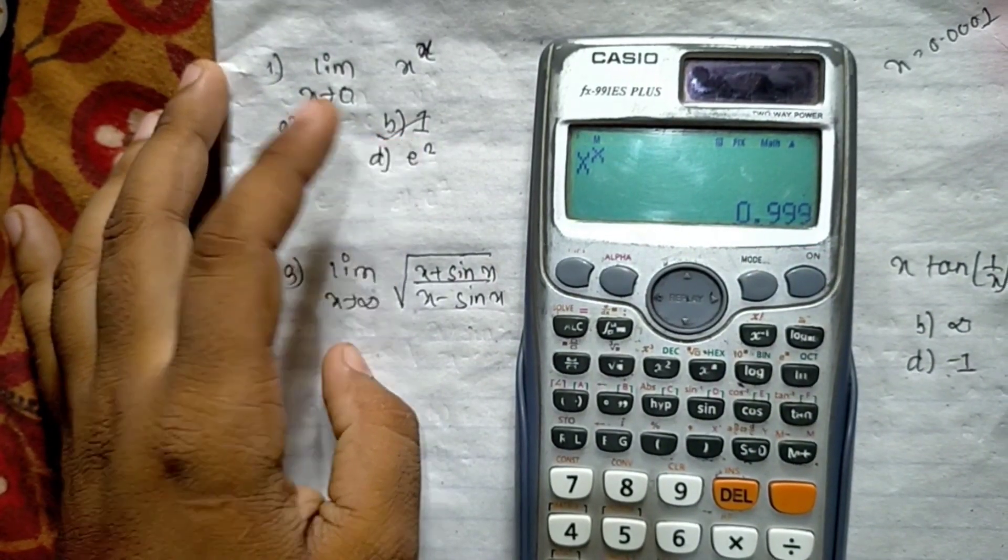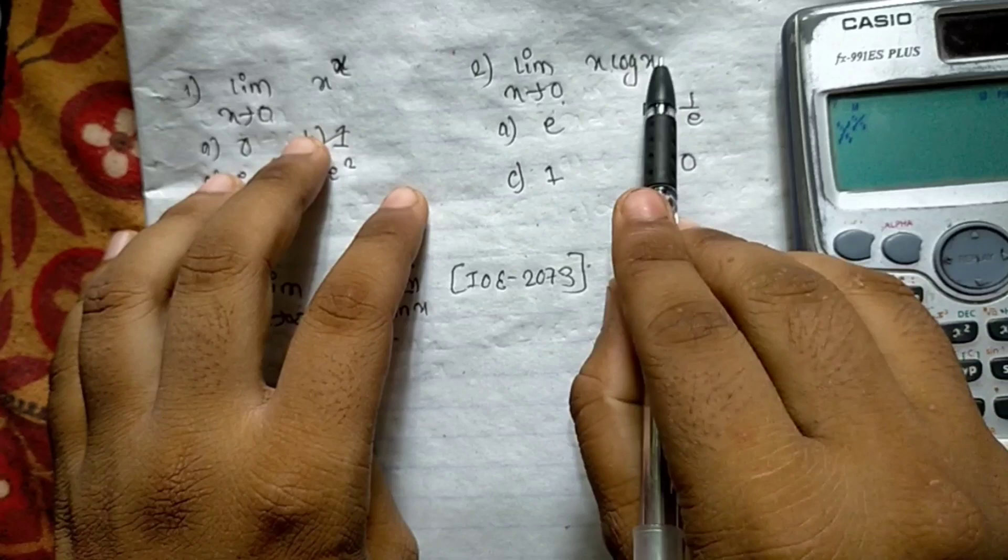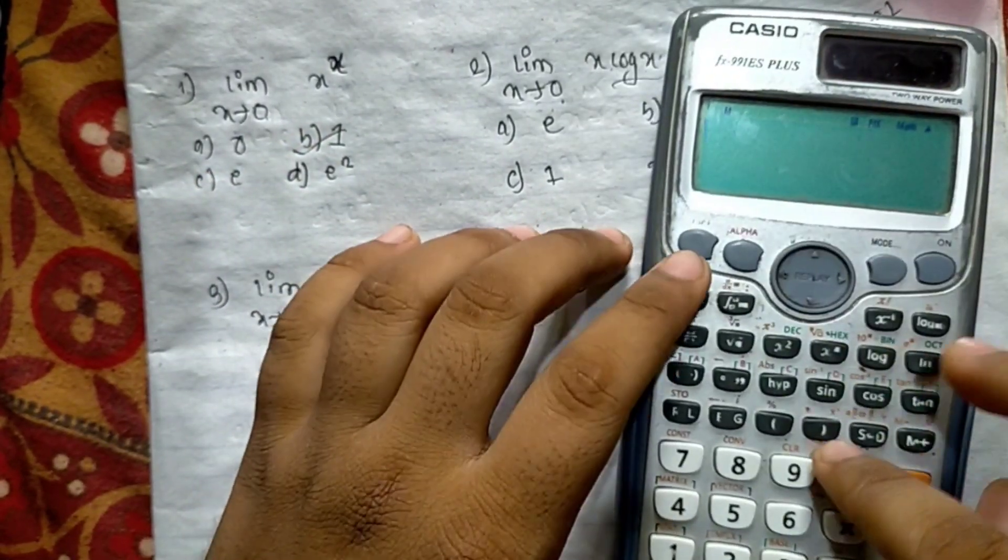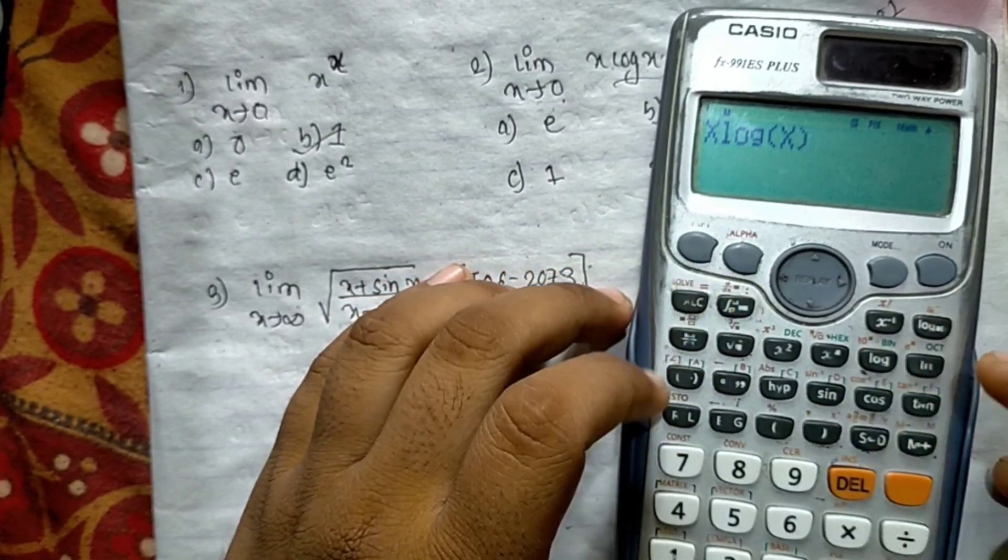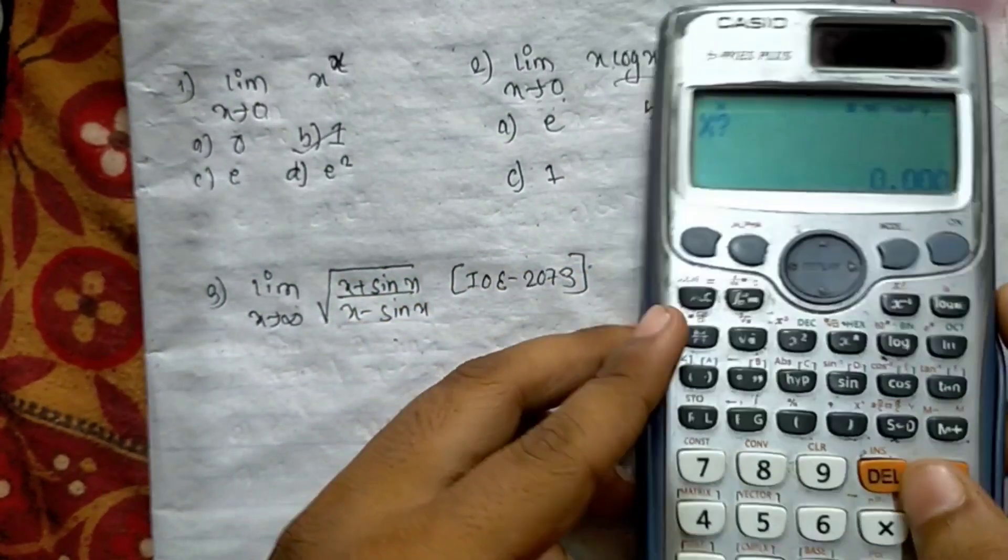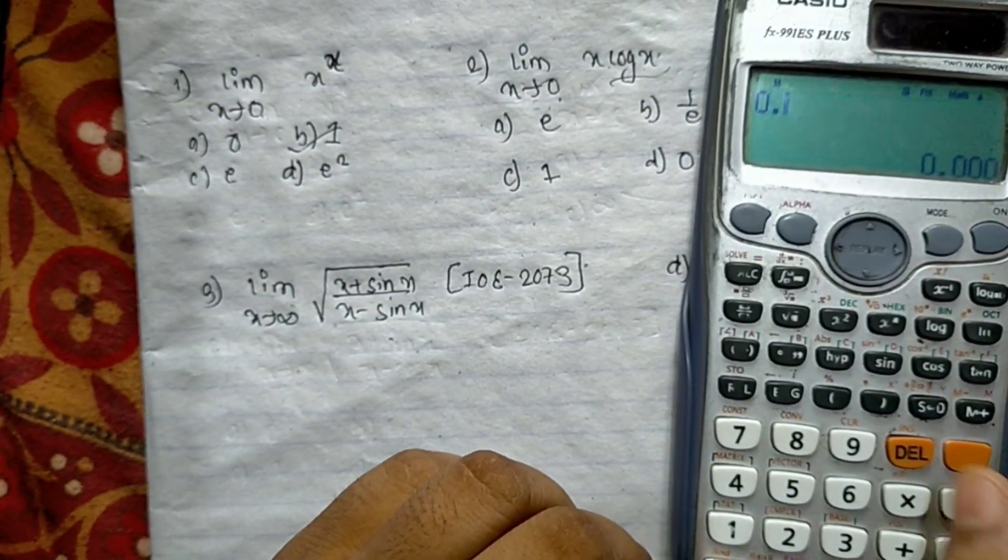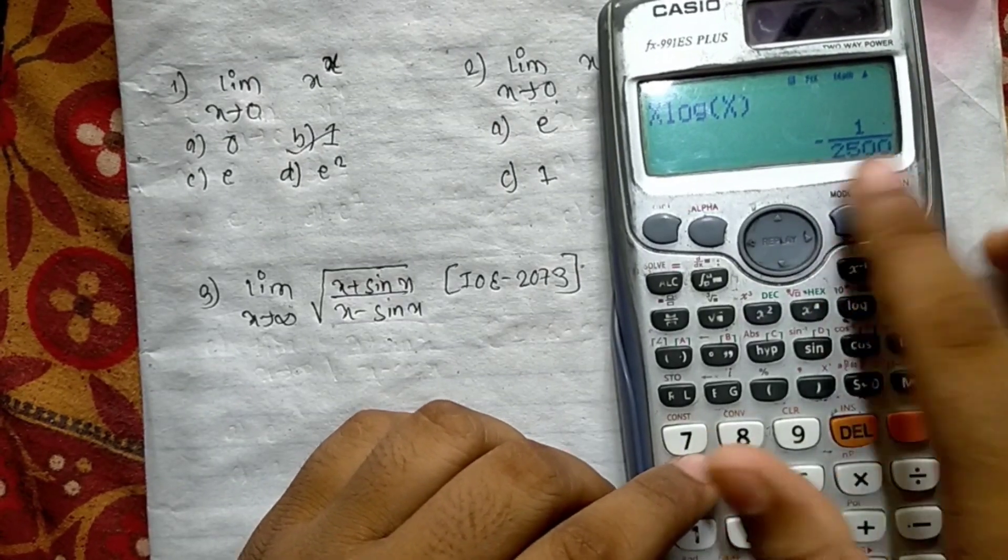Second limit, x tends to 0, x log x. This time my question is x log x. Same method: x tends to 0, so 0.0001 multiplied by log of 0.0001. Answer is 0.